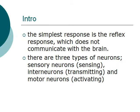The simplest response is the reflex response, which does not communicate with the brain. There are generally three types of neurons, and we are going to talk about all three types in this lecture because they are related to reflex. The first one is called sensory neurons, which are for sensing.